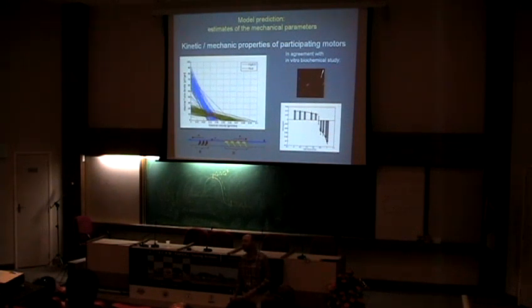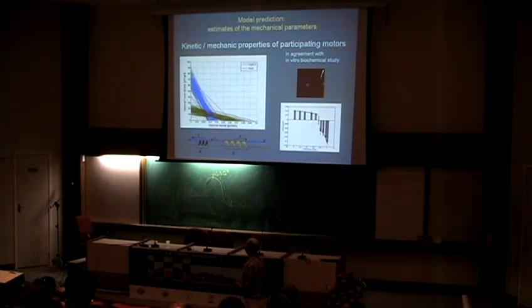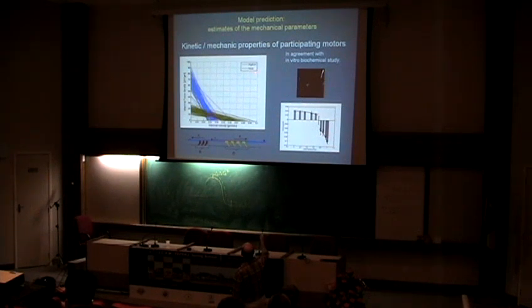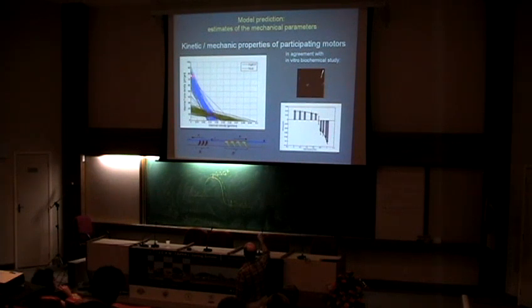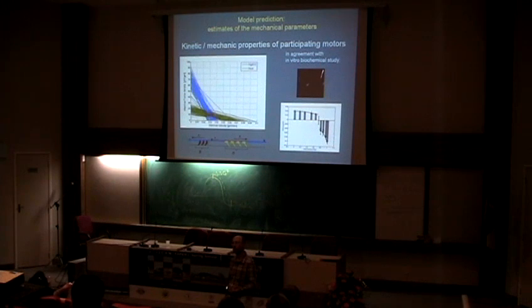So there are very interesting other predictions that the model gives. Remember, I told you that the parameters we don't know are not only the times at which motors are switching on and off, but actually the motor strength and the motor velocities. For most of the motors, they are just not measured. So, for example, the model predicts that for two most important motors in the spindle, one is one type of kinesin called HCD, and another type of kinesin, there are those force velocity curves.